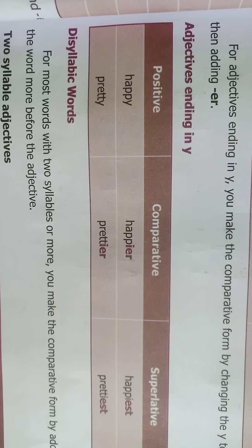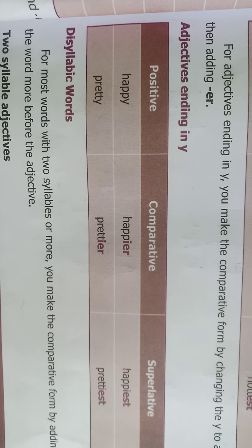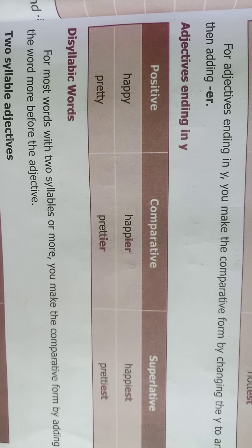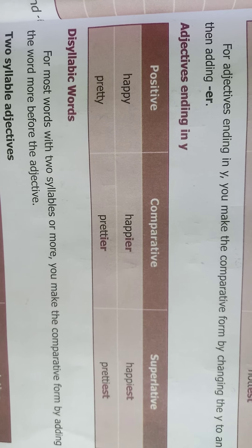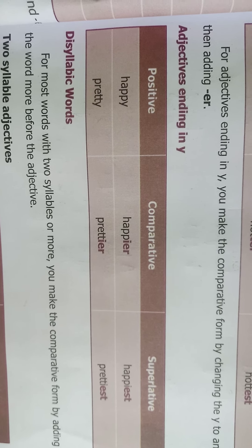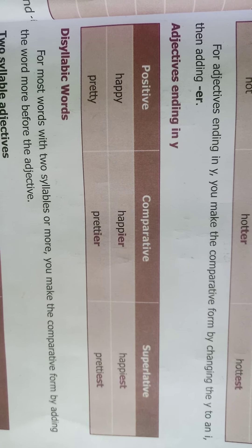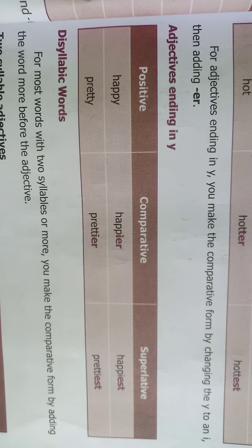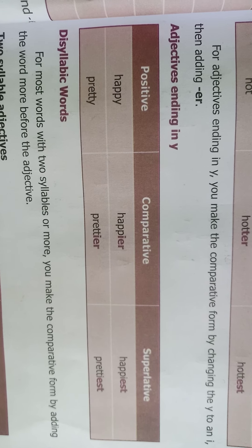Adjectives ending in 'y': for example, 'happy' ends in 'y'. We remove the 'y' and add 'ier' to make it comparative and 'iest' to make it superlative.